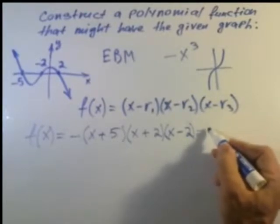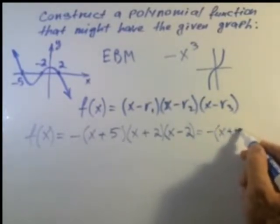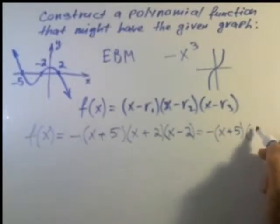Which gives us this equals negative (x plus 5)(x squared minus 4).